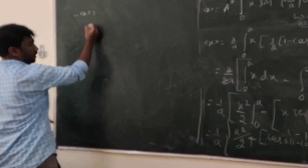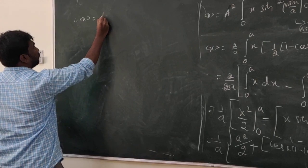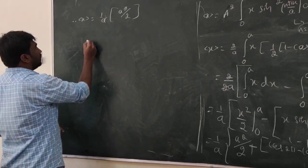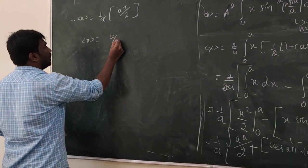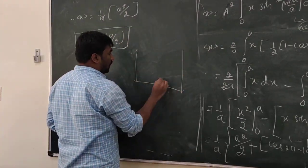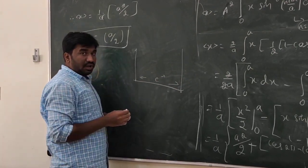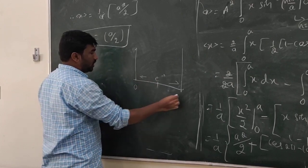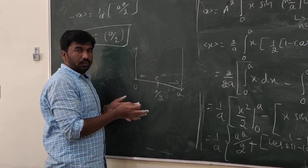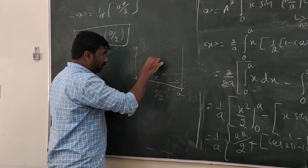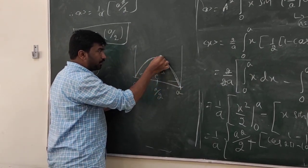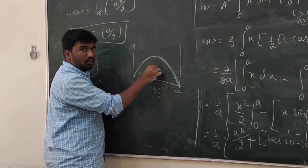Therefore the expectation value of x is equal to a/2. That means, if an electron is bound in a 1D box and it is in the ground state, the most probable position to find the electron is a/2 — the centre of the box. The probability of getting the electron at this position is maximum.